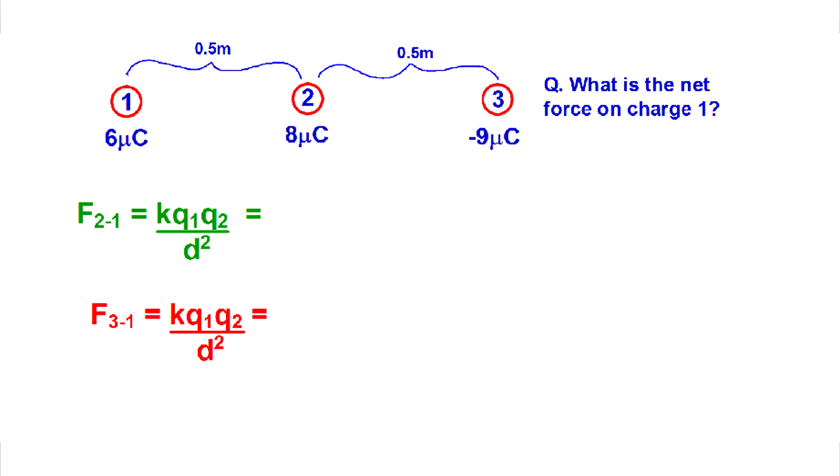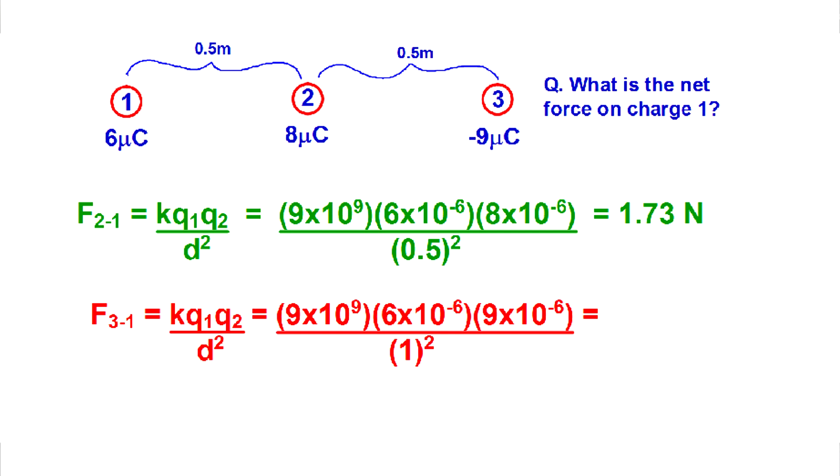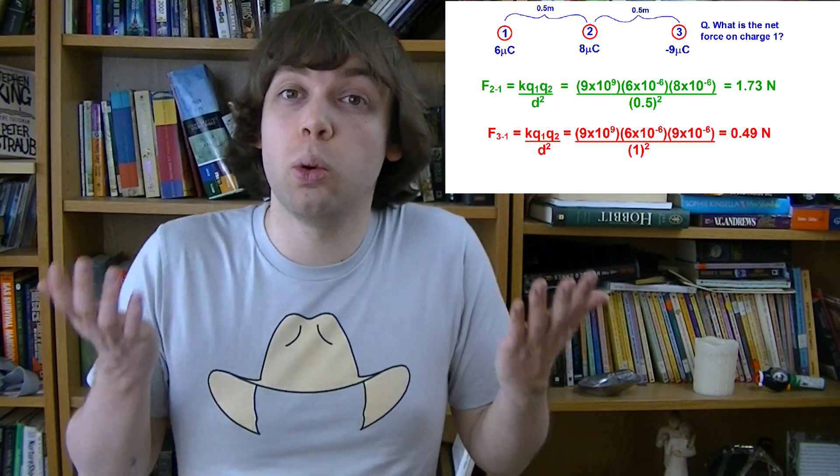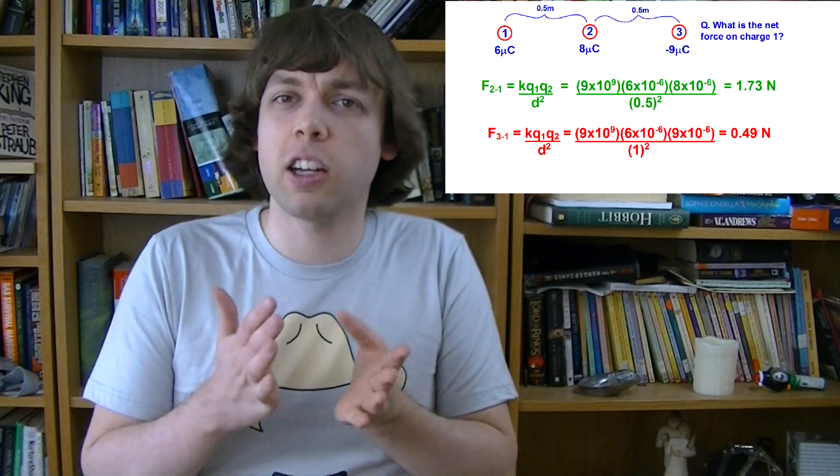First, we would have to calculate the force that charge 1 feels due to charge 2. And if we do that, we get a force of 1.73 newtons. Next, we need to calculate the force that charge 1 feels due to charge 3. That gives us 0.49 newtons. Now we have two numbers, so how do we combine them? How do we get a final answer?